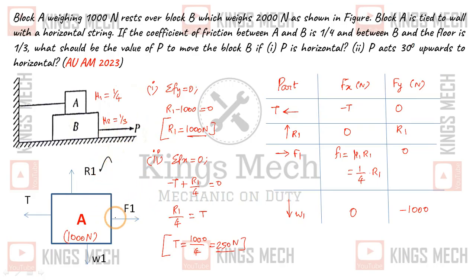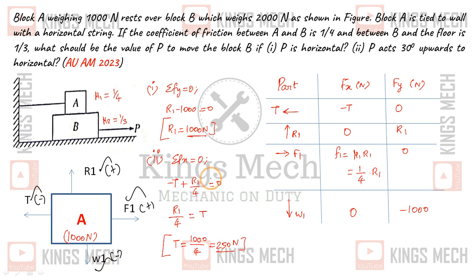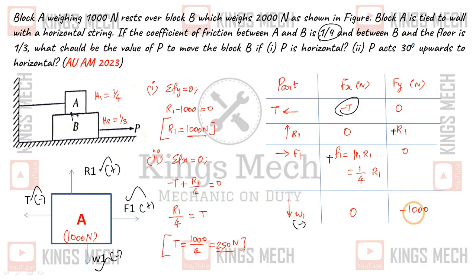For block A's free body diagram: R1 on the positive y-axis, F1 on the positive y-axis, W1 on the negative y-axis (W1 = 1000 N), and tension T on the negative x-axis. F1 equals mu1 times R1, where mu1 (friction between A and B) is 1/4, so F1 = R1/4. W1 = minus 1000 Newton.